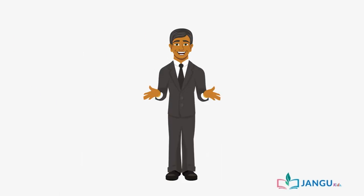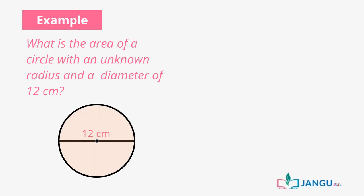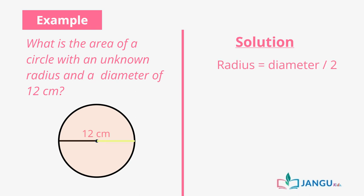Having learned how to calculate the area of different plane shapes, let's practice solving a word problem or quantitative aptitude question. What is the area of a circle with an unknown radius and a diameter of 12 centimeters? Using our knowledge of the formula pi r squared, we can find the radius since we know the diameter is 12 centimeters. The radius of a circle is half of its diameter, so the radius is 12 divided by 2, which is 6 centimeters.